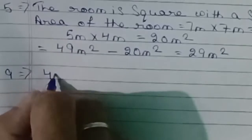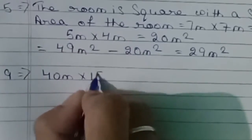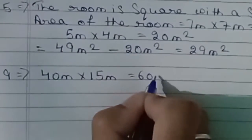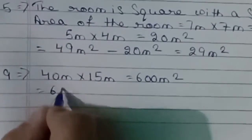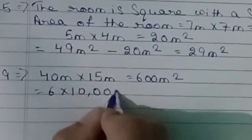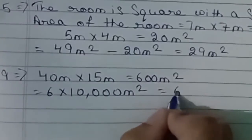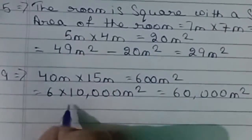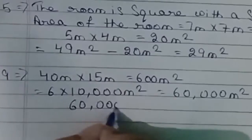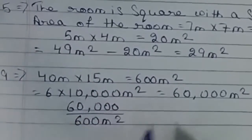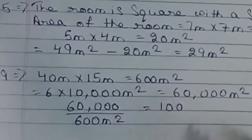Question 9. How many gardens each 40 m long and 50 m wide can be made out of 6 hectares of land? Area of one garden = 40 × 15 = 600 m². Total land = 6 × 10,000 = 60,000 m². Number of gardens = 60,000 ÷ 600 = 100.